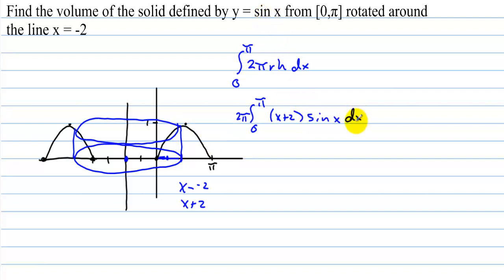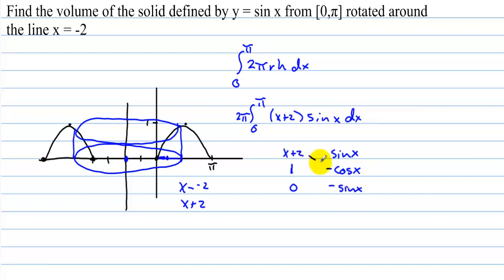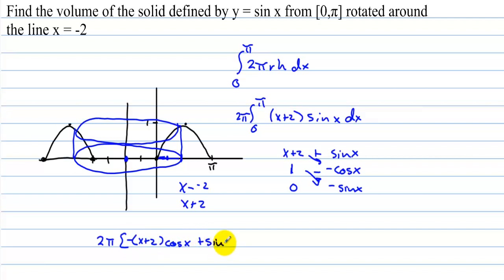So the integral is 2π times the integral from 0 to π of (x plus 2) times sine(x) dx. We use integration by parts with the tabular method. We differentiate (x plus 2): getting 1, then 0. We integrate sine(x): getting negative cosine(x), then negative sine(x). The result is 2π times [negative(x plus 2)cos(x) plus sin(x)] evaluated from 0 to π.